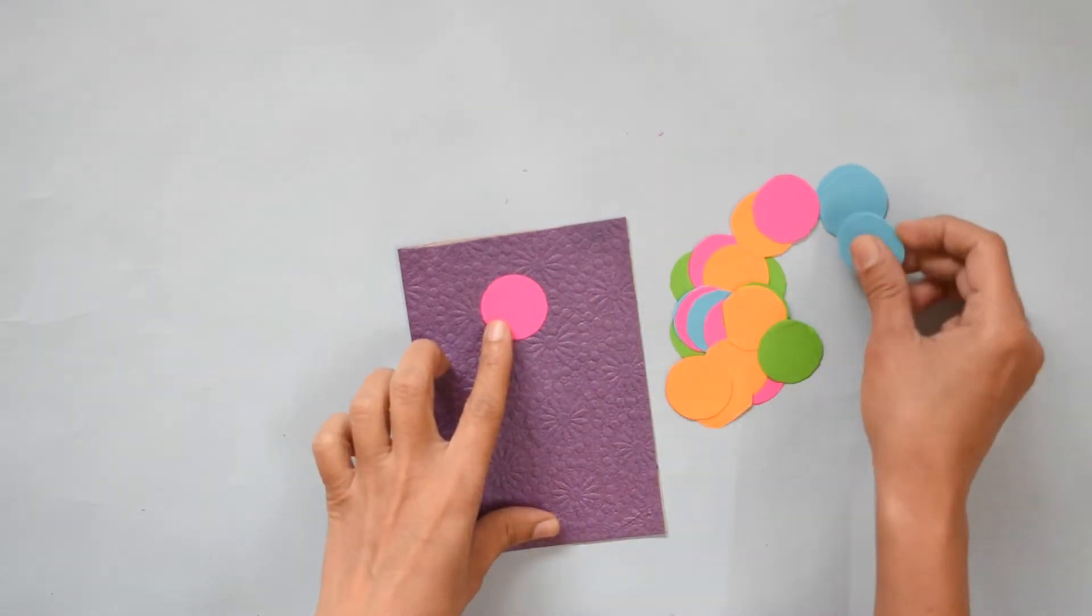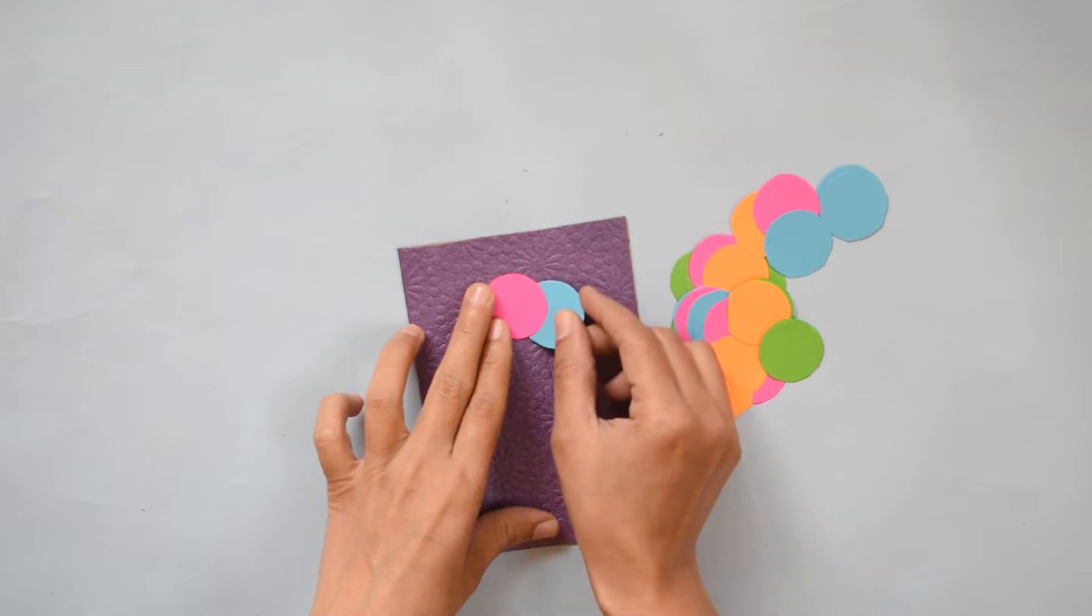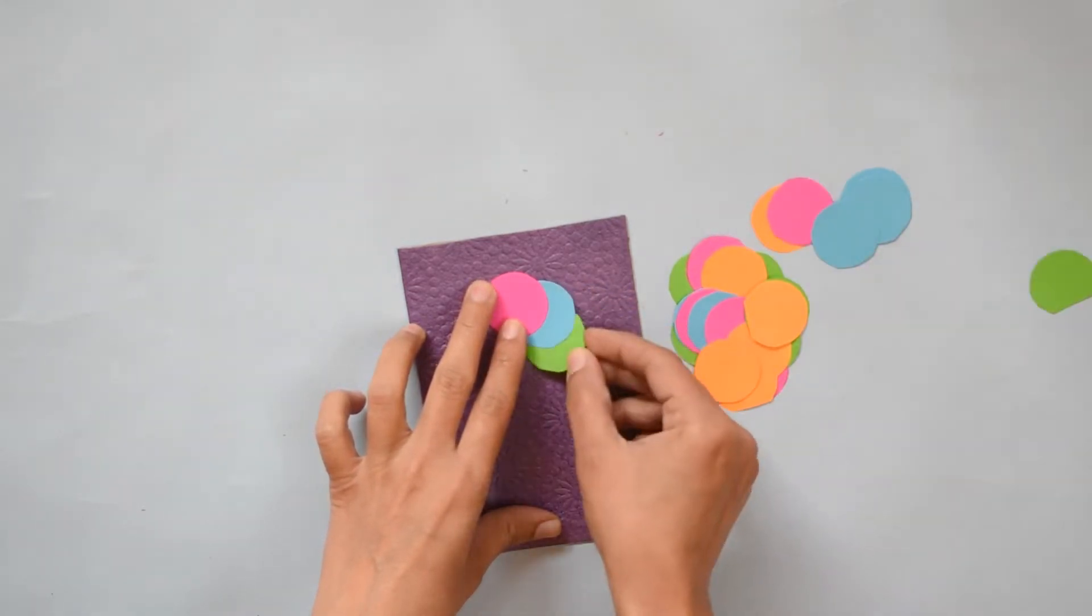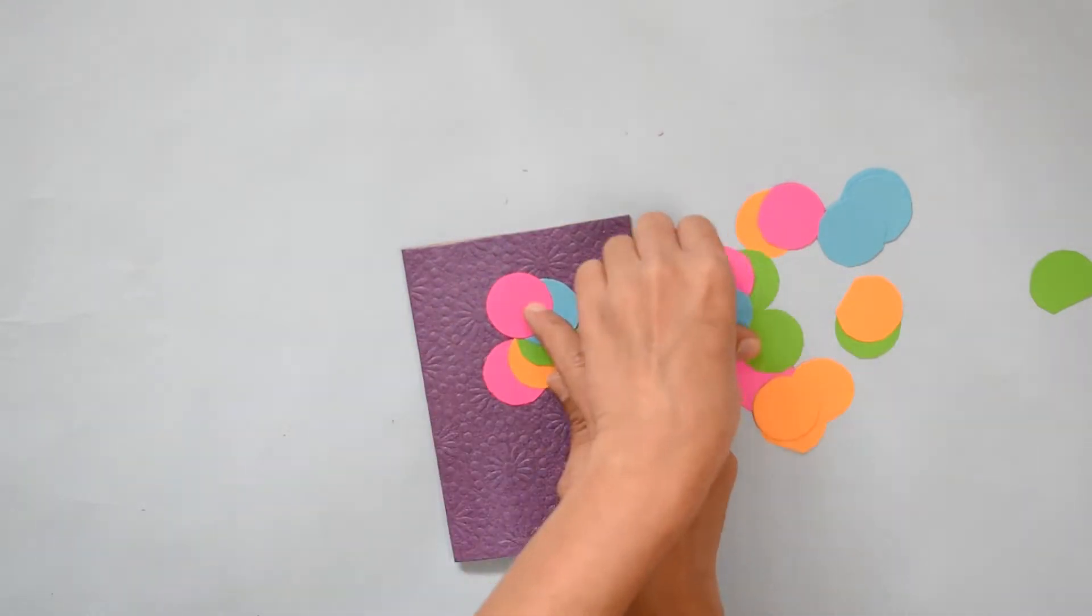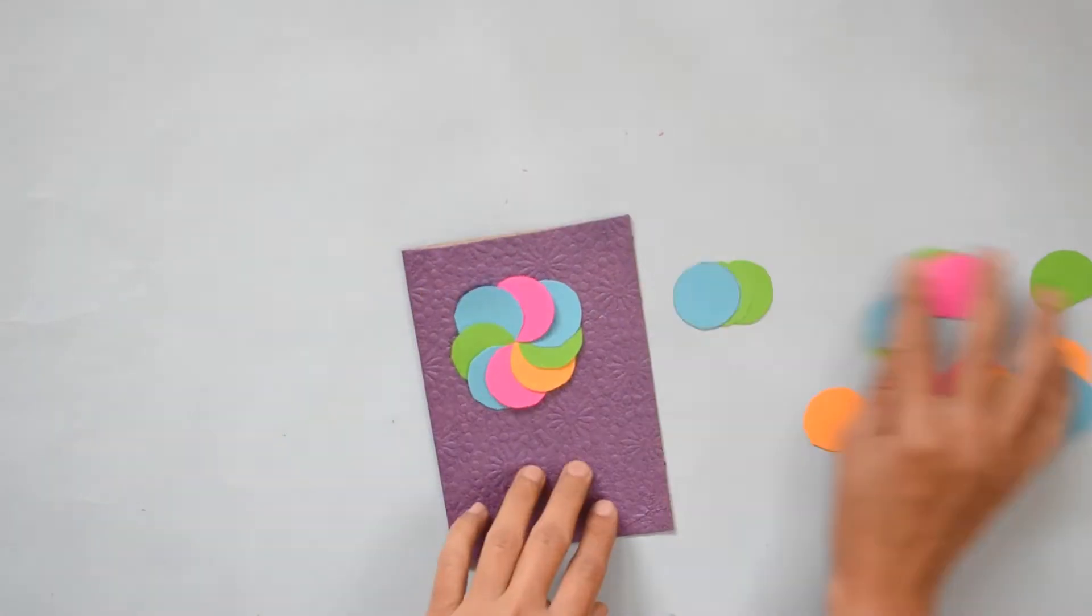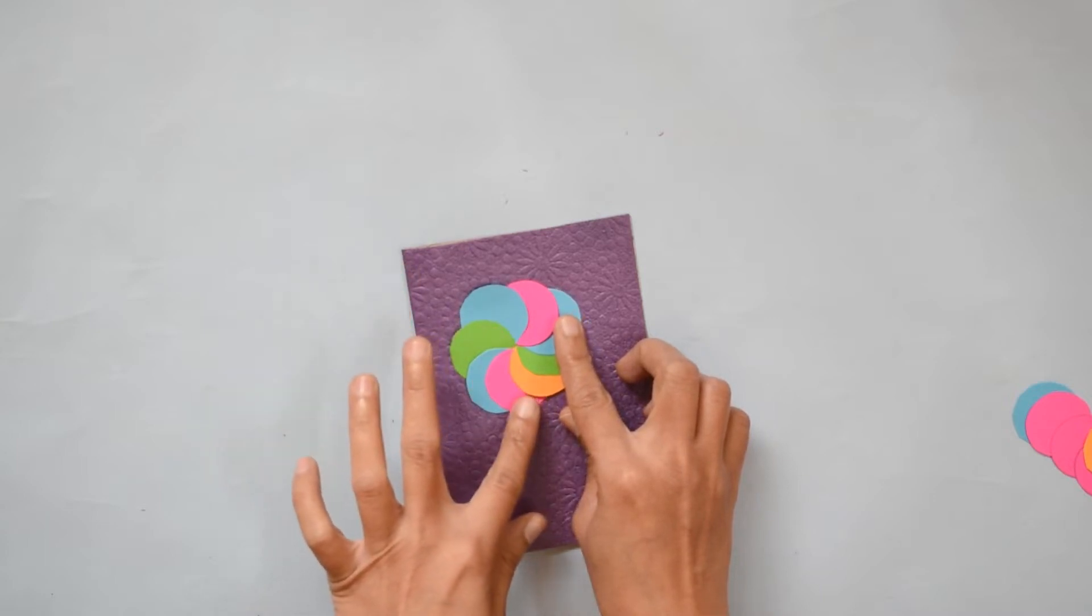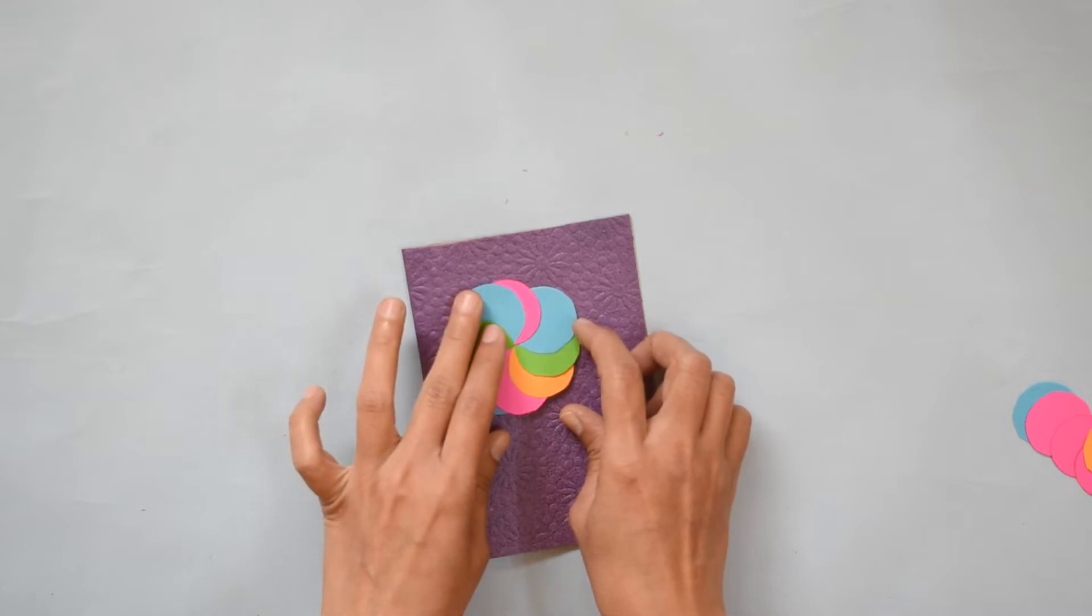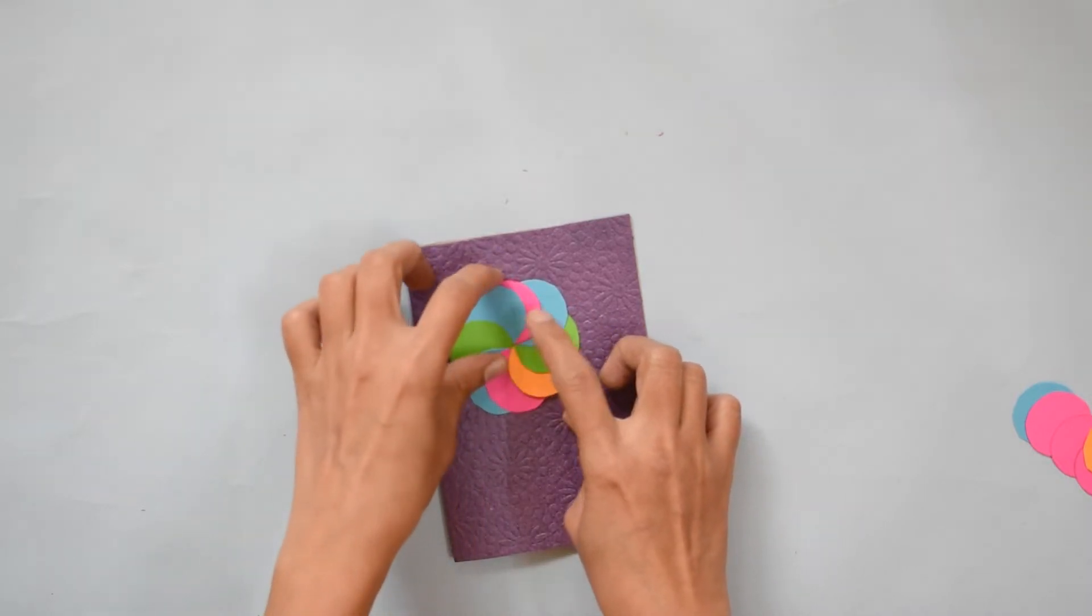Now we are going to place one by one like this. Adjust all the circles, make a round shape so it will look like a lollipop.